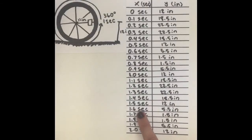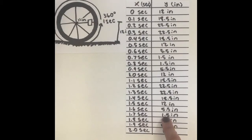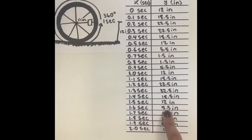At 1.6 seconds, the reflector has started to go to the bottom half of the wheel for its second time and is at 1.5 inches. My bad, I think that is at 5.5 inches.